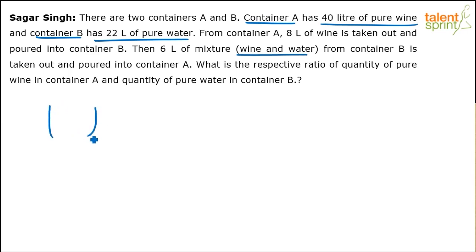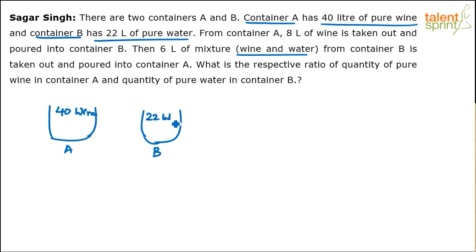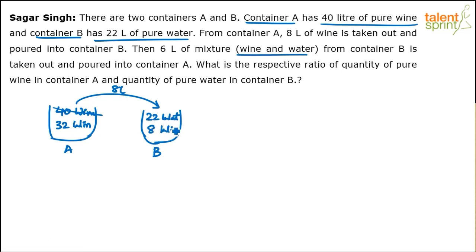Let's say this is container A and here is container B. A has got 40 liters of wine and B has got 22 liters of water. From container A, 8 liters is transferred to B, which means 40 minus 8 — so 32 liters of wine remain in A. Container B now becomes 22 liters of water plus 8 liters of wine.